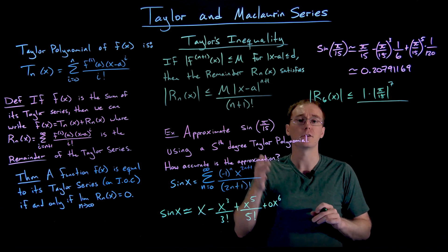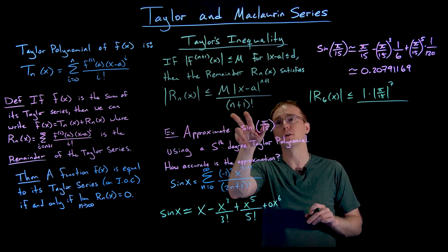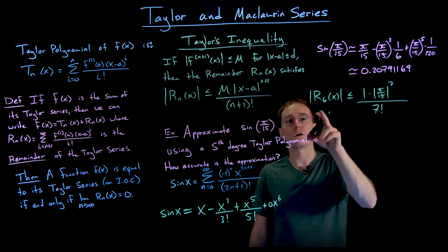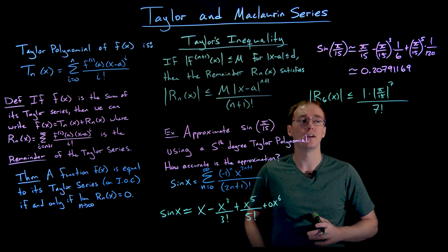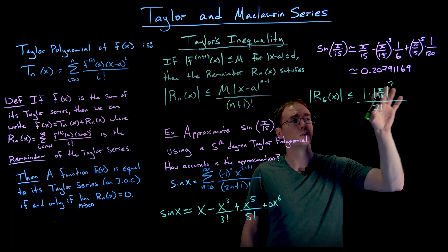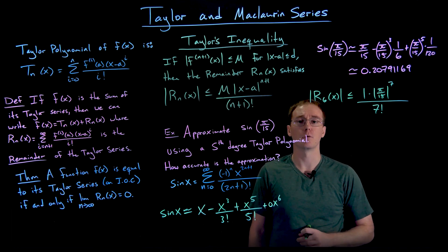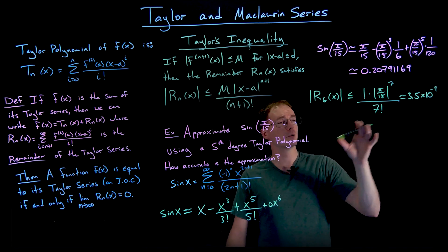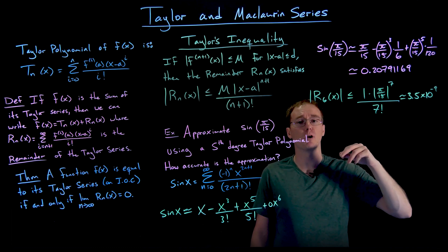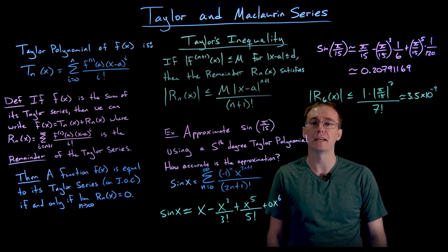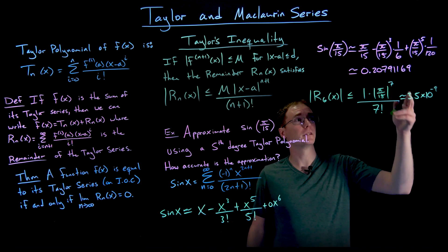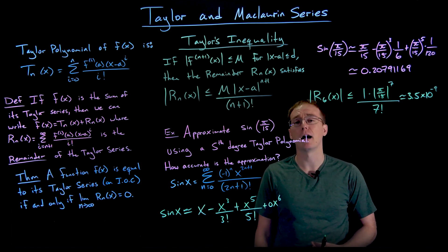Plugging this into a calculator, (π/15)⁷ / 7! is approximately 3.5 × 10⁻⁹ — a very small number. That means essentially all the digits in our approximation are accurate, so our fifth degree Taylor polynomial gives a very good approximation for sin(π/15).